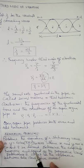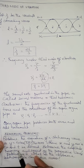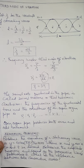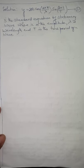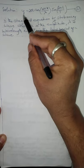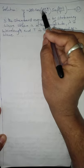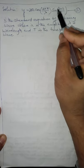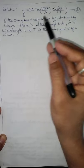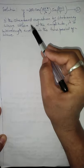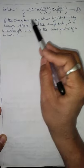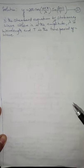In order to solve this problem, I compare this equation with the standard equation of stationary wave. The standard equation is y = 2a cos(2πx/λ) sin(2πt/T), where small letter a indicates the amplitude, λ represents the wavelength, and capital T indicates the time period of a wave.